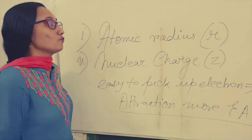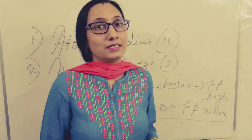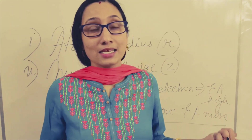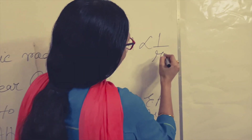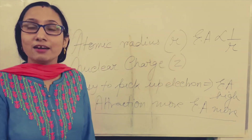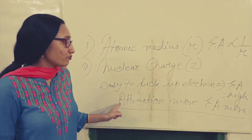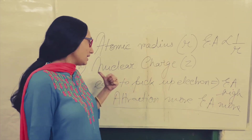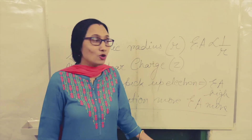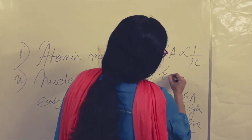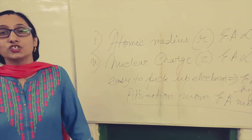Now let us see these two factors. Atomic radius: if atomic radius is more, then attraction is less. So electron affinity and atomic radius are inversely proportional to one another. Nuclear charge more means attraction more, and attraction more means easy to pick up an electron, and easy to pick up an electron means electron affinity more. So electron affinity is directly proportional to nuclear charge.